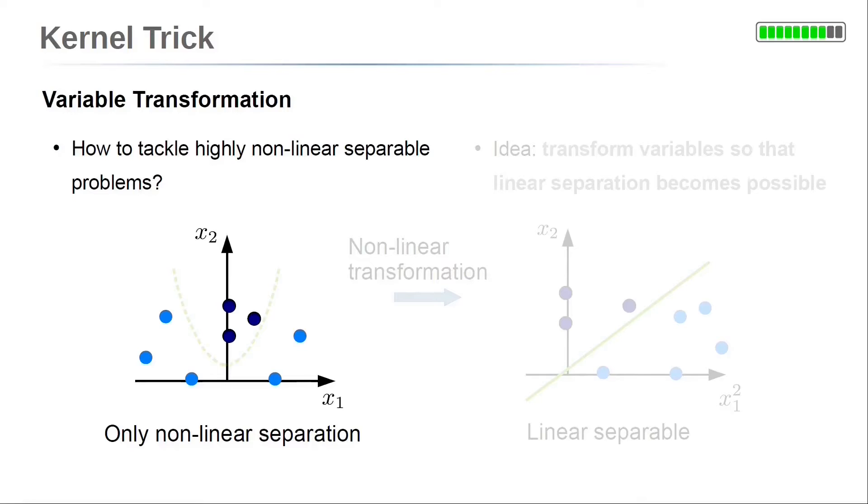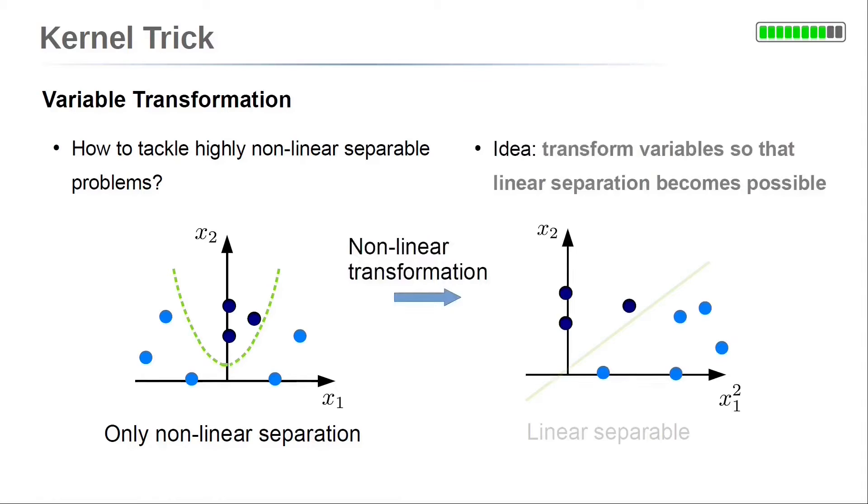Often there exists a variable transformation that transfers a non-linear separable problem into a linear separable situation. Take a look at our example. On the left side, the two classes, the light blue dots and the dark blue dots, are clearly not separable by a linear boundary. However, they are separable by a parabolic boundary. So if we use a quadratic transformation of the input variable x1, we obtain the result displayed on the right side. Now this problem is linear separable and we can use a support vector machine for classification. Consequently, variable transformations will help us to apply support vector machines more generally.